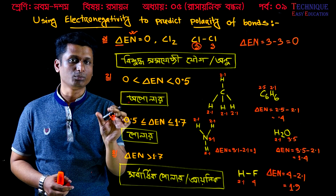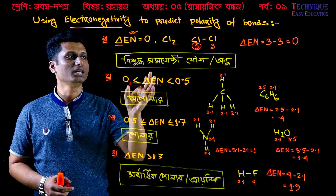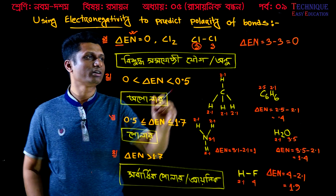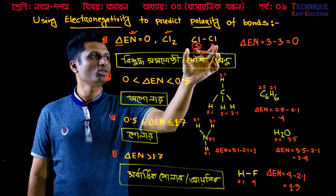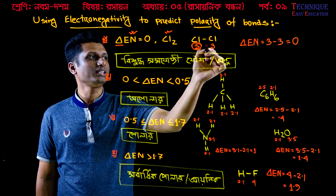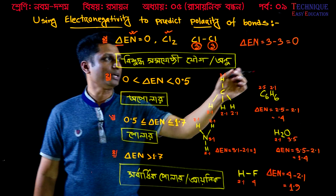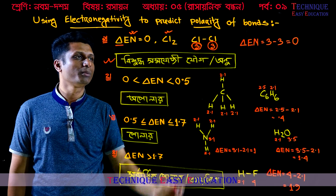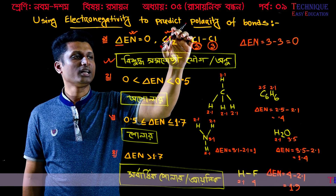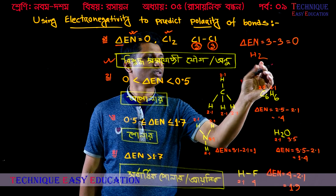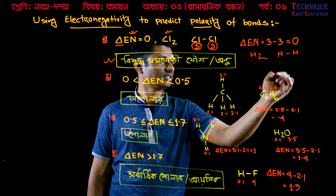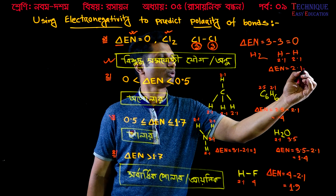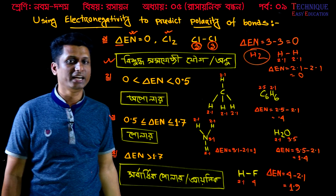For example, Cl2: chlorine has electronegativity of 3, so delta EN = 3 minus 3 = 0, meaning the bond is nonpolar. Similarly, H2: hydrogen has electronegativity 2.1, so delta EN = 2.1 minus 2.1 = 0, which means the bond is nonpolar.